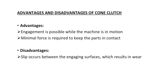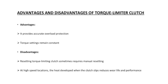Cone clutch — advantages: engagement is possible while machine is in motion and minimal force is required to keep parts in contact; disadvantages: slip occurs between engaging surfaces resulting in wear. Torque limiter — advantages: provides accurate overload protection and torque settings remain constant; disadvantages: resetting the torque limiting clutch sometimes requires manual reset, and at high speed the heat developed when the clutch slips affects wear life and performance.